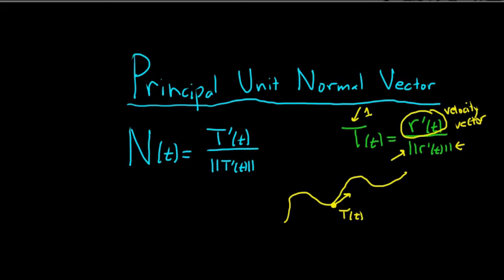So what is this other vector? Well, this one is the normal vector. You just take the derivative of T(t) and then normalize it — turn it into a unit vector — and then it's orthogonal, or perpendicular, to T(t). So it points in this direction here. This would be N(t). Beautiful stuff.